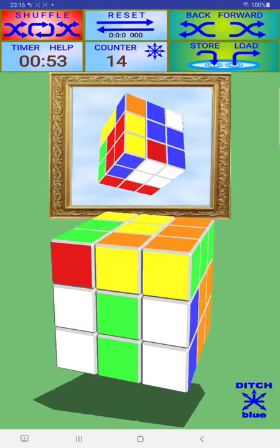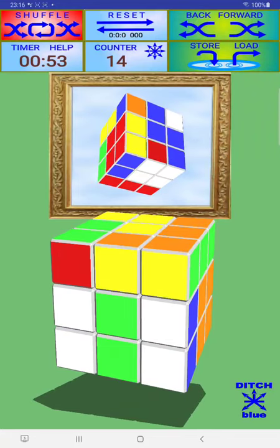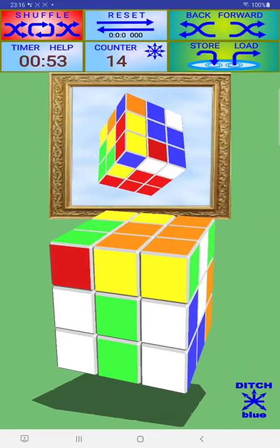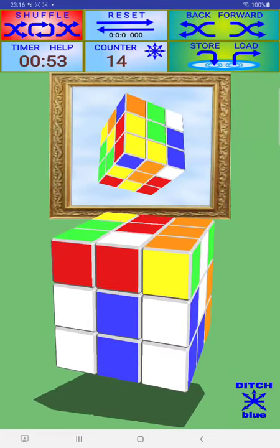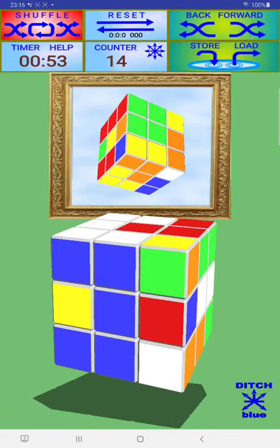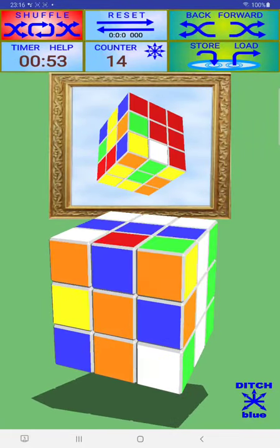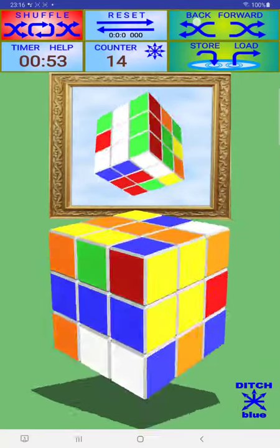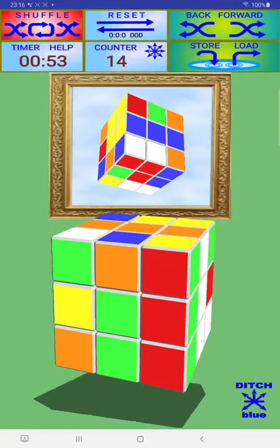Now I have moved the cube and I can make these moves backward. Here is the backward button and this automatically stores the movement into this buffer.